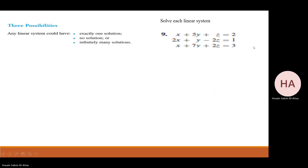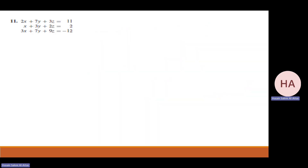So for any linear system, there are exactly three possibilities: exactly one solution (x and y are fixed values), no solution (the equations are contradictory), or infinitely many solutions. These are the only three possibilities. Now let's extend this to three equations and three unknowns.